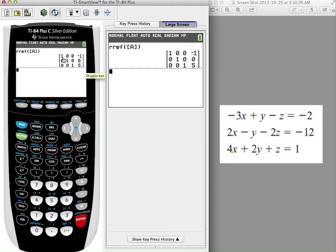What this means is that I have one X and it's equal to negative one, I have one Y and it's equal to zero, I have one Z and it's equal to five. So my answer is negative one, zero, five, and I should write it as an ordered triple.